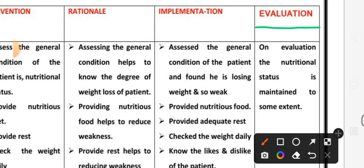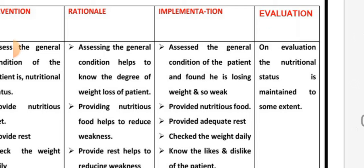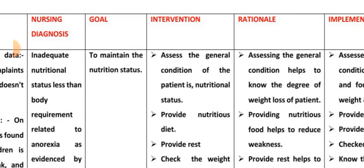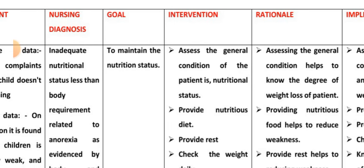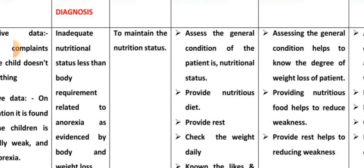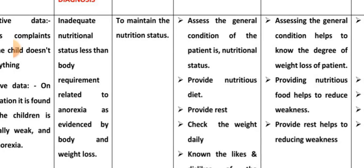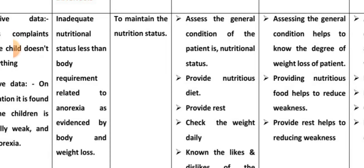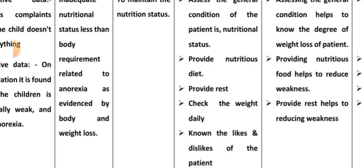Evaluation: the nutritional status is maintained to some extent. After all interventions, the patient's weight improved and he feels better. This completes the second nursing diagnosis: inadequate nutrition status less than body requirement related to anorexia, as evidenced by body weakness and weight loss.